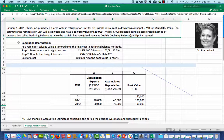Phillip's CPA suggests using an accelerated method of depreciation called declining balance at twice the straight-line rate, which is also known as the double declining balance method. Phillip Inc. agreed.